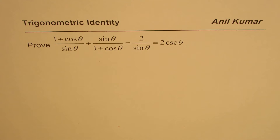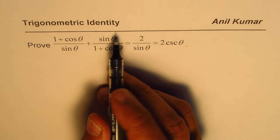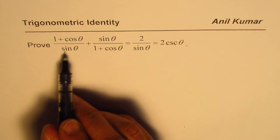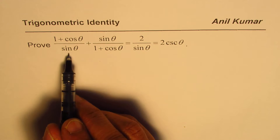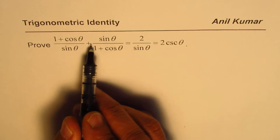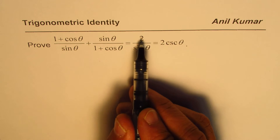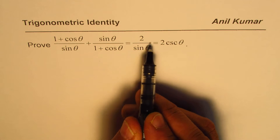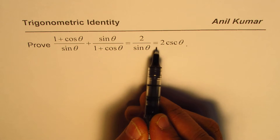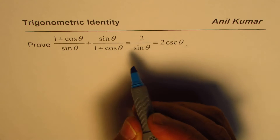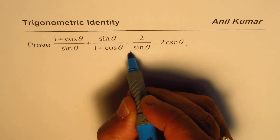I'm Anil Kumar and in this video we'll see how to prove a trigonometric identity. The question is: prove that (1 + cosθ)/sinθ + sinθ/(1 + cosθ) equals 2/sinθ, which is equal to 2 cscθ.